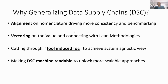So we're trying to generalize the supply chains for a few reasons. First, to align nomenclature, standardize and formalize to create a benchmark. Second, and most importantly, vectoring of value — connecting with the value and understanding why we're doing things. This also connects to product development methodologies. And third, cutting through what we call the tool-induced fog: so many tools are continuously onboarded in companies that people are thinking there's an app for everything, implementing the next tool rather than looking from a business capability point of view.